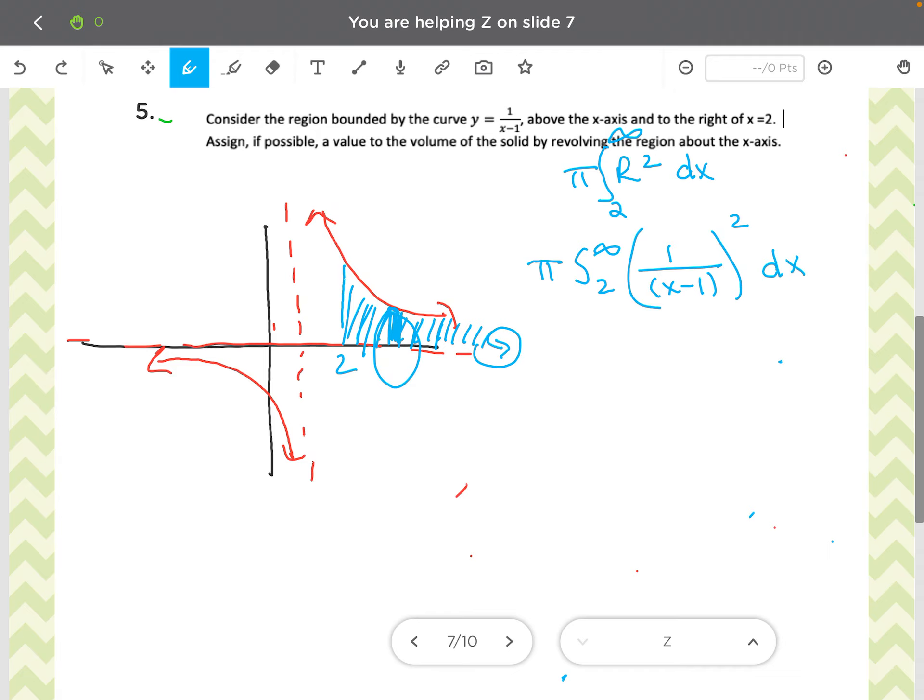So if your bound is infinity, remember we need to replace it with the limit statement. So I'm going to replace it with t. So I've got pi, 2 to t.